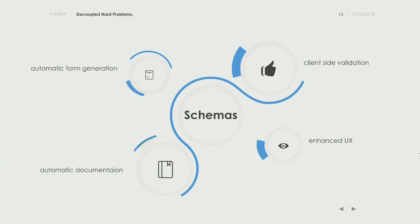There are more benefits beyond documentation. Because the shape is described in a standard that software understands, we can generate forms. Imagine your Ember app or iOS app wants a form for that article — the iOS app downloads the schema, sees 'title is a string of max 255 characters,' generates a text field with that limit, and does the same for body. You end up with software that reads a schema and automatically generates a form without anyone typing any HTML.